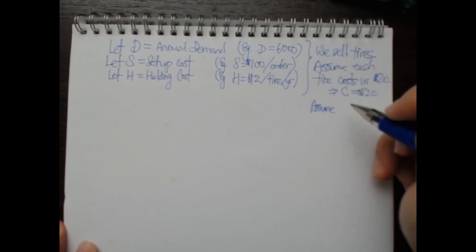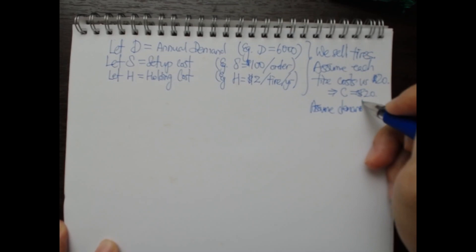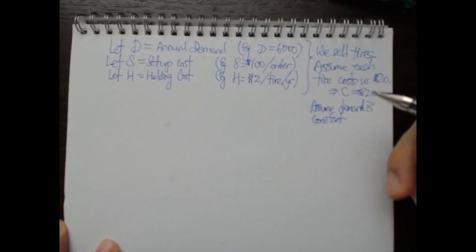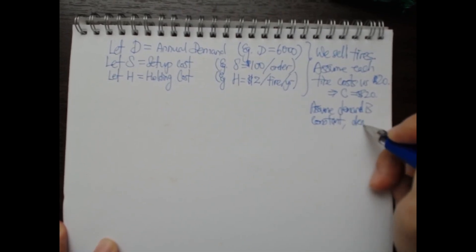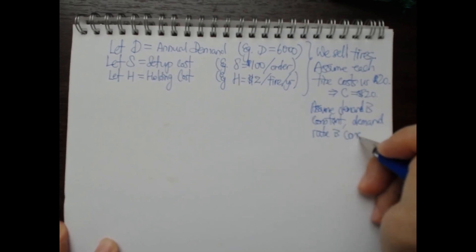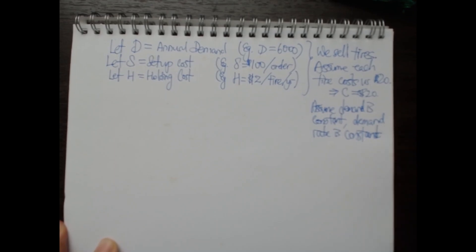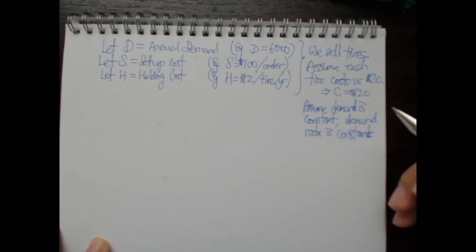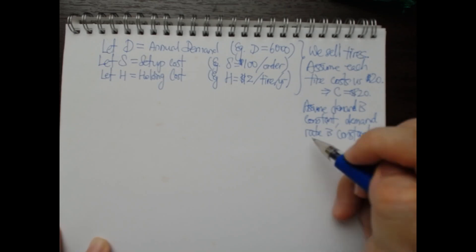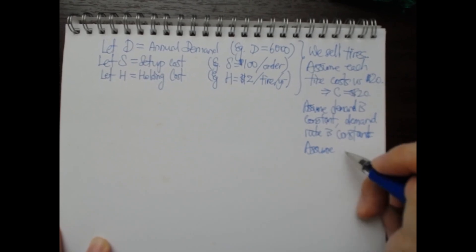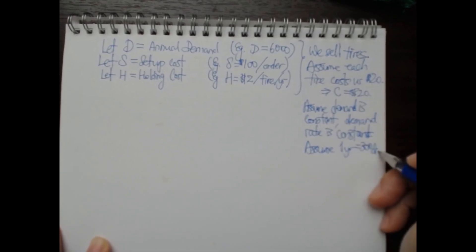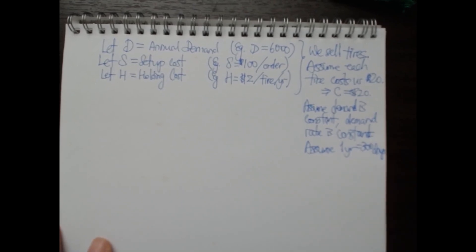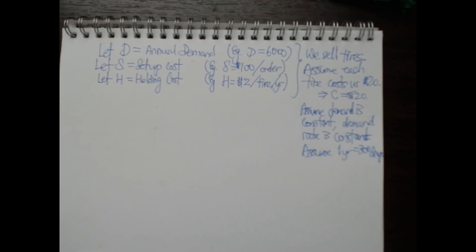We further assume that demand is constant and the demand rate is also constant — that is, every day a certain number of tires will definitely be sold. We also assume that one year equals 300 days for simplicity. This is quite normal because if we subtract off Saturdays and Sundays when factories are closed and tires are not being sold, that removes 112 days a year.